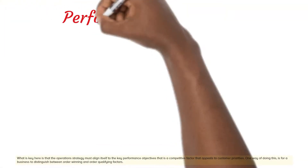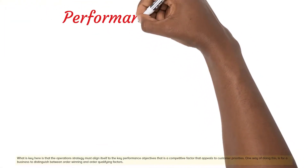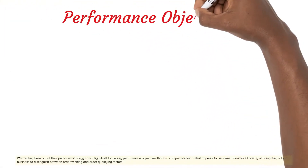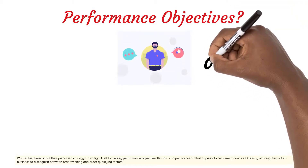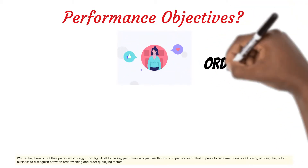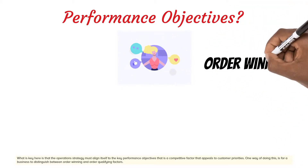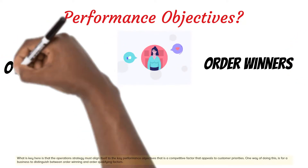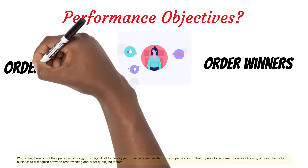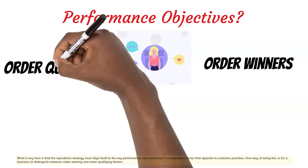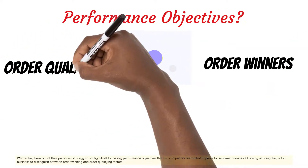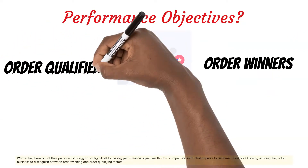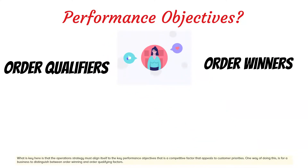What is key here is that the operation strategy must align itself to the key performance objectives that are a competitive factor appealing to customer priorities. One way of doing this is for a business to distinguish between order winning and order qualifying factors.